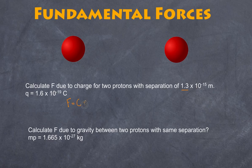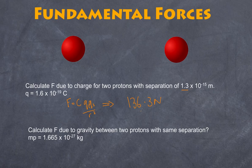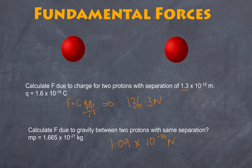Using the electrostatic formula — k × q1 × q2 / r² — the repulsive force between the two protons at that separation works out to approximately 136.3 newtons, which is quite large. Using Newton's law of gravitation with the proton mass, the gravitational force works out to approximately 1.09 × 10⁻³⁴ newtons. The electrostatic repulsive force is fantastically larger than the gravitational attractive force, and yet we know that protons do stick together in the nucleus.